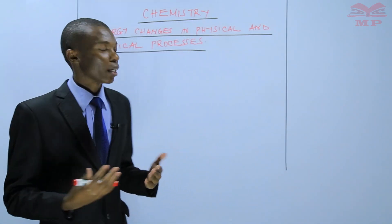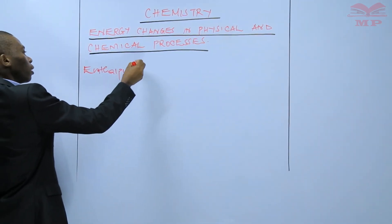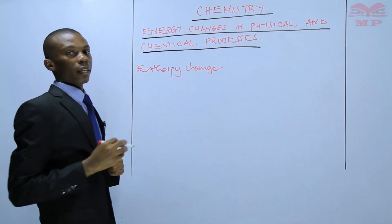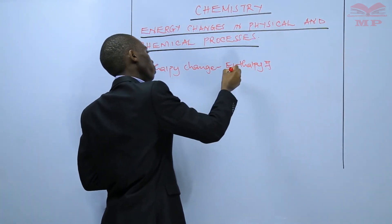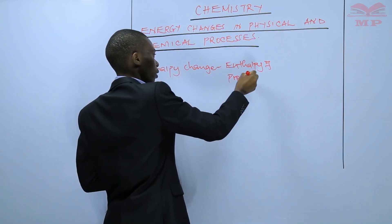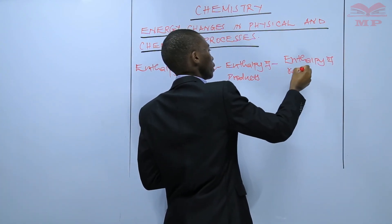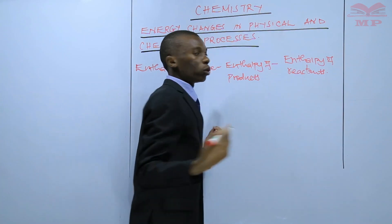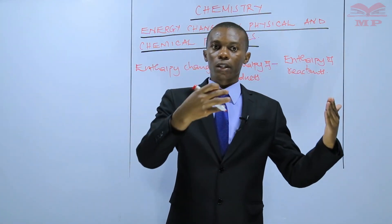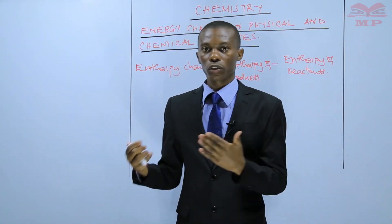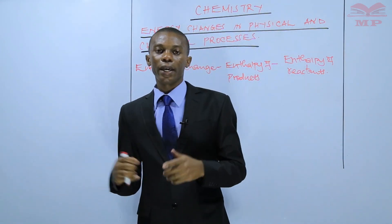The enthalpy change is given by the enthalpy of products minus the enthalpy of reactants. We also gave examples using ammonium nitrate and sodium hydroxide to illustrate endothermic and exothermic reactions.